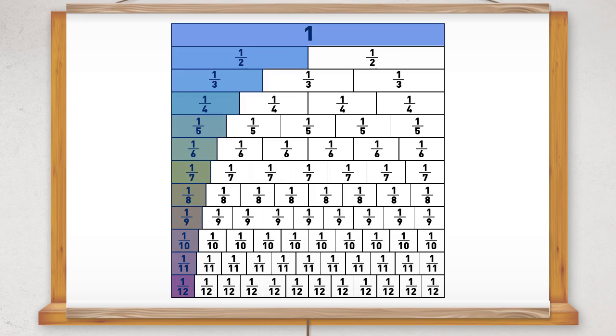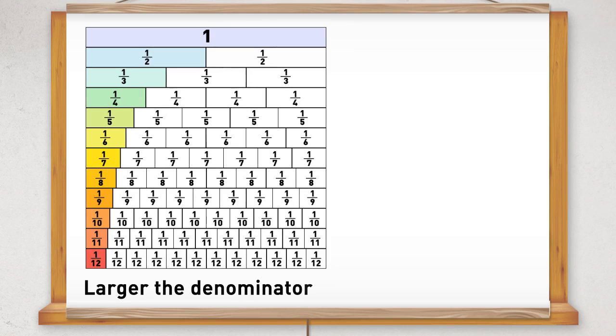The fractions shown in color are unit fractions, where the numerator is one. We can see that as the denominator gets larger, the fractions become smaller. So if we had a unit fraction which wasn't on this wall,